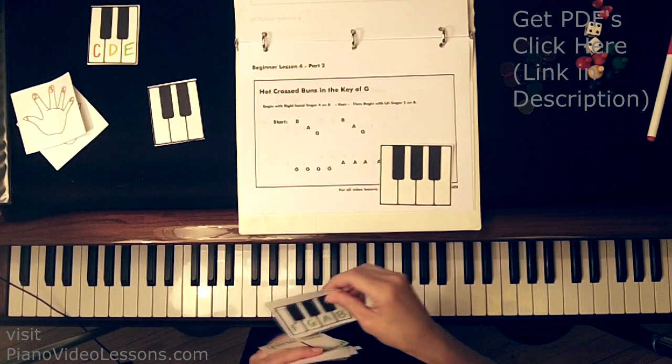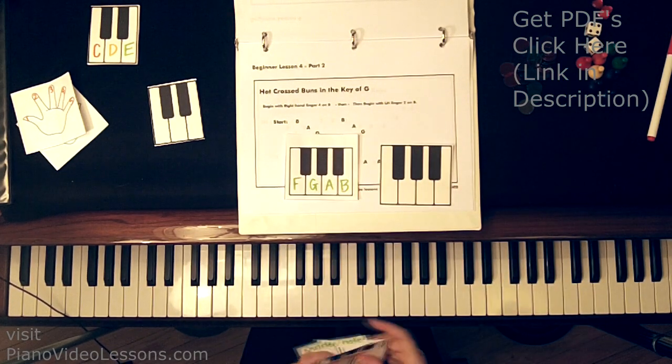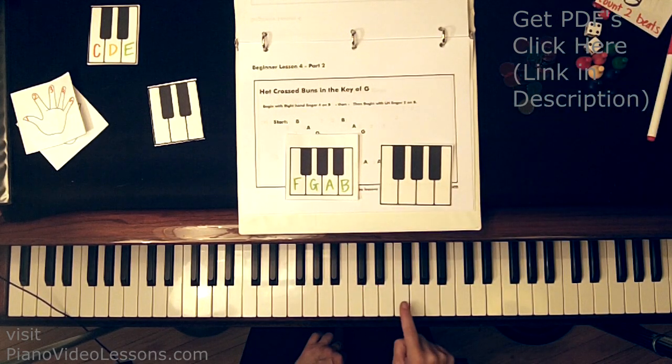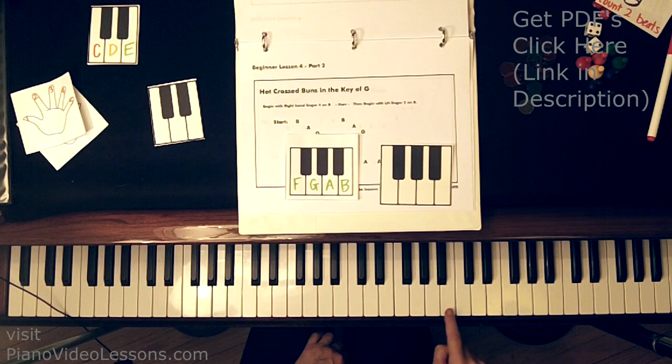And here they are, F, G, A, and B. So when you see F, G, A, B, you can find them on the white keys here, F, G, A, B.